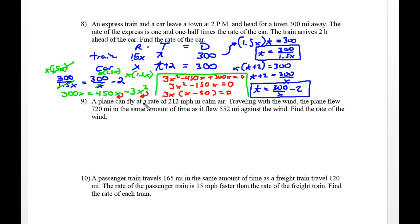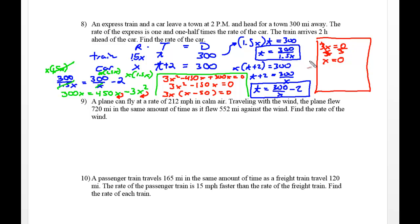This gives two answers. If 3x equals zero, then x equals zero — that doesn't make sense because it would mean the train arrives in zero time, so it's an excluded value. If x minus 50 equals zero, then x equals 50, which makes sense. The rate of the car is 50 mph. The train was going 1.5 times faster: 1.5 times 50 equals 75 miles per hour.